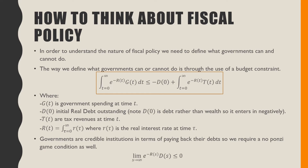So how do we think about fiscal policy? In order to understand the nature of fiscal policy we need to define what governments can or cannot do. The way we define this is through the use of the budget constraint, where G_t is government spending at time t, D_0 is the initial real debt outstanding — note D_0 is debt rather than wealth so it enters negatively. T_t is tax revenues at time t, and the r_t term is the sum of all real interest rates. Governments are credible institutions in terms of paying back their debts, so we also require a no-Ponzi game condition.